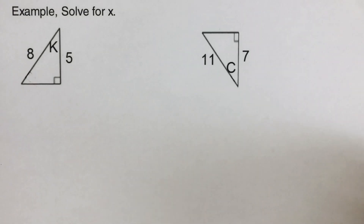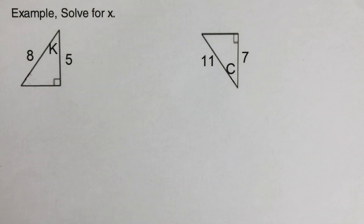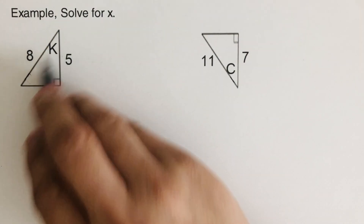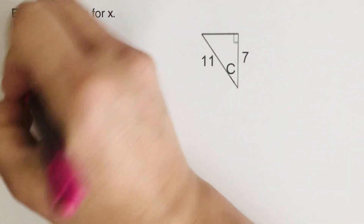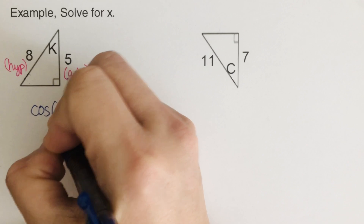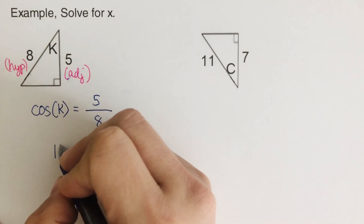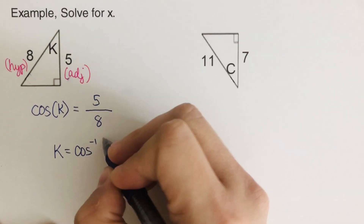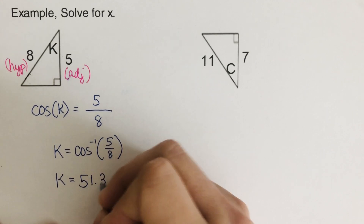We have more examples — solve for angle K and angle C. I encourage you to pause the video and try on your own. For angle K, since this is angle K, 5 is the adjacent and 8 is the hypotenuse. Cosine of K equals 5 over 8. So angle K equals the inverse cosine of 5 over 8, and using the calculator, angle K should be 51.32 degrees.